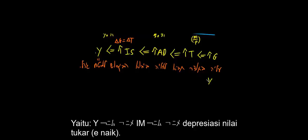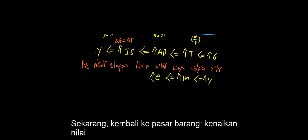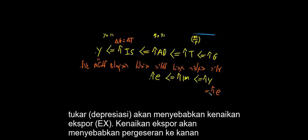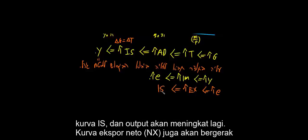So we have Y increasing, a depreciation in the exchange rate. And again we now move to the output market — an increase in the exchange rate will lead to an increase in production, and a shift to the right of the IS curve, so output will increase and the curve will also shift to the right.